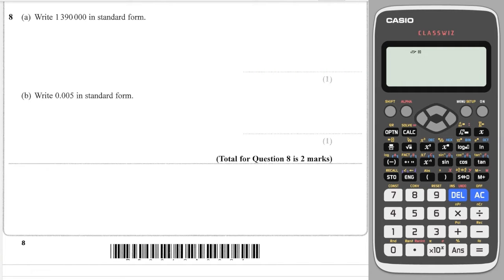You can't get more common than just straight up convert these into standard form. So I want the number to be between 1 and 10, ideally 1.39. I need to move the decimal point 1, 2, 3, 4, 5, 6 spaces to get there. So this is 1.39 times 10 to the power of 6.